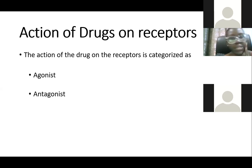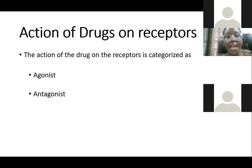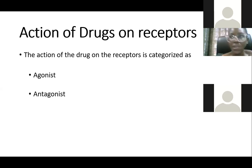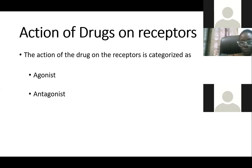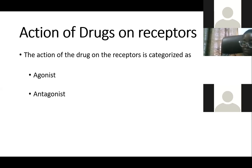When we look at receptors, the action of a drug on the receptor is categorized as either agonist or antagonist. An agonist means the drug is in tune with the function of the receptor, while an antagonist means it is against the function of the receptor.